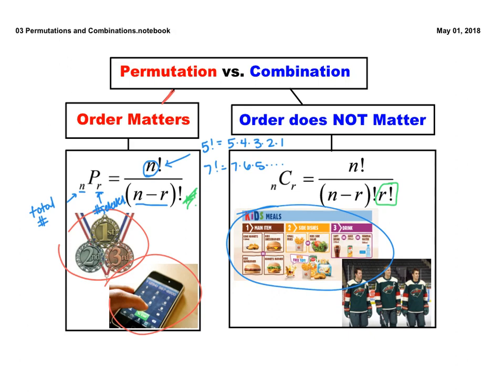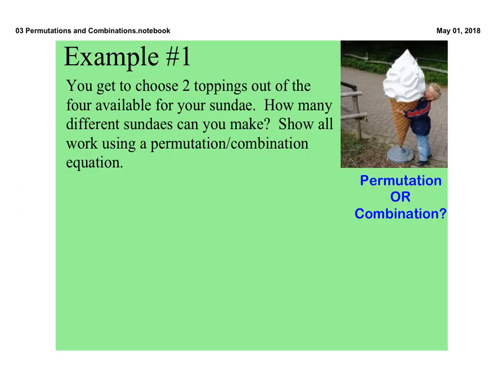For the first example: you get to choose two toppings out of four available for your sundae. How many different sundaes can you make? First, we have to decide — is this a permutation or a combination? When you put toppings on your sundae, does it matter if you order hot fudge and caramel or caramel and hot fudge? No, it's going to make the same sundae, so it doesn't matter. This is going to be a combination because order doesn't matter.